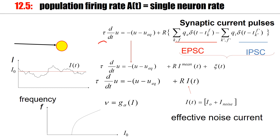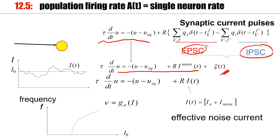We have leaky integrate-and-fire neurons driven by excitatory and inhibitory current pulses, so that we have control over the variance without changing the mean. Effectively, in terms of the differential equation, it gives a mean drive, which we can balance if the spike arrival rates of EPSP and IPSC are the same, and then a noise term. For these stationary situations, the input current generated by stochastic spike arrival has a constant mean and a white noise term. We can calculate the mean firing rate as a function of noise strength sigma — with noise, the function smooths out.